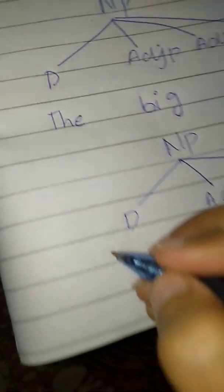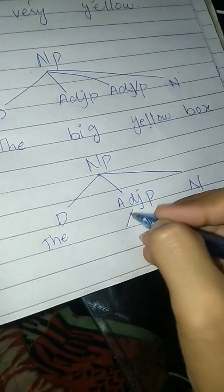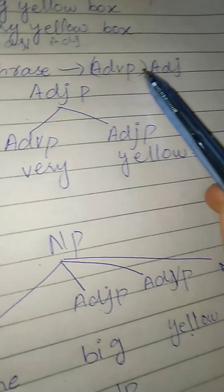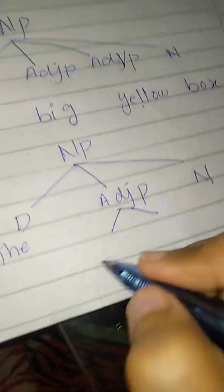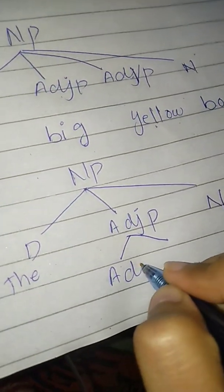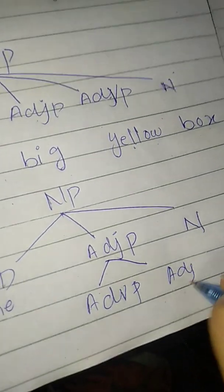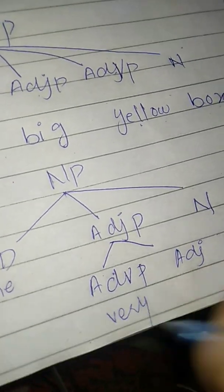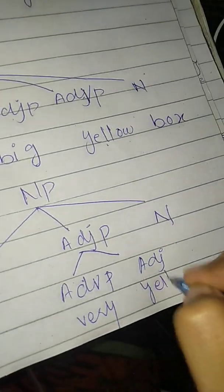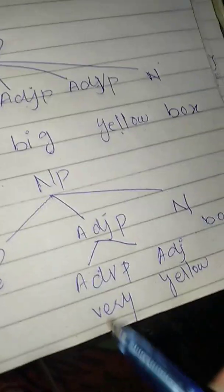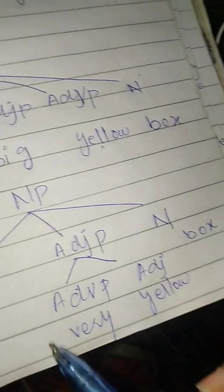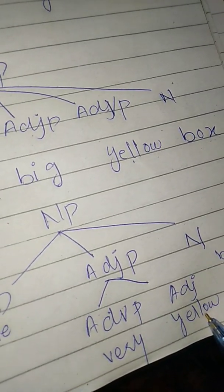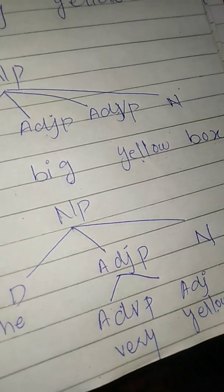Determiner is adjective phrase. Adjective phrase is adverb and adjective phrase — here I will write adverb phrase. Adverb phrase and adjective: adverb phrase is 'very', adjective is 'yellow'. 'Box' which is yellow is modified, and 'very' is also modified. So here we have a rule: adjective phrase rule.